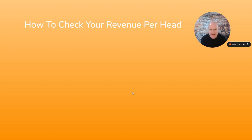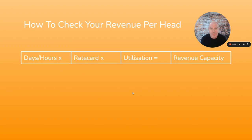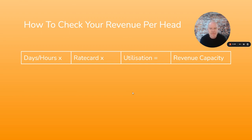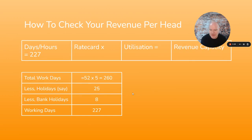The way to double-check that and make sure it's a sensible and achievable target is with a very simple calculation. Here it is set out: you take a number of days and hours, a rate card, a target utilization, and that gives you your revenue capacity. Hopefully that revenue capacity will be at least as much as your revenue per head target.